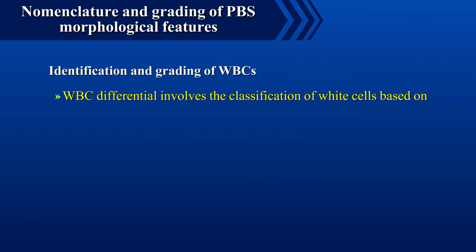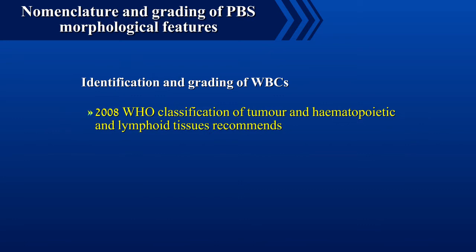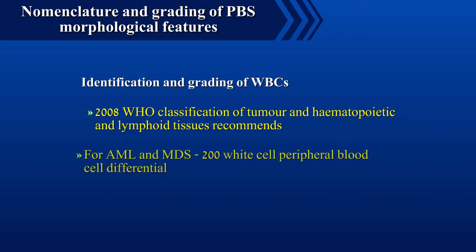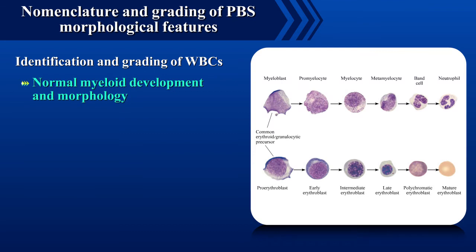WBC differential involves the classification of white cells based on their size, nuclear shape, chromatin pattern, cytoplasmic appearance and content. The 2008 WHO classification recommends a 200 white cell peripheral blood differential for diagnostic workup in AML and MDS. However, a 100 white cell differential is more usual in the routine hematology laboratory. First, we shall look at normal myeloid development and morphology.